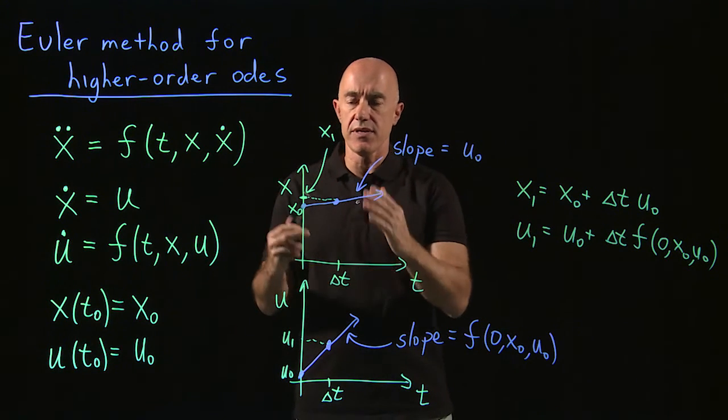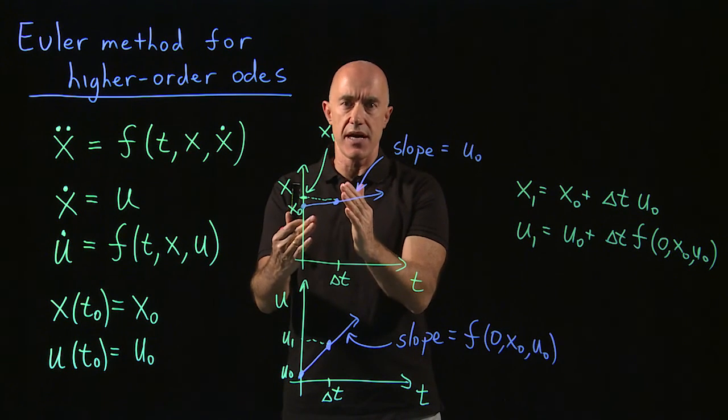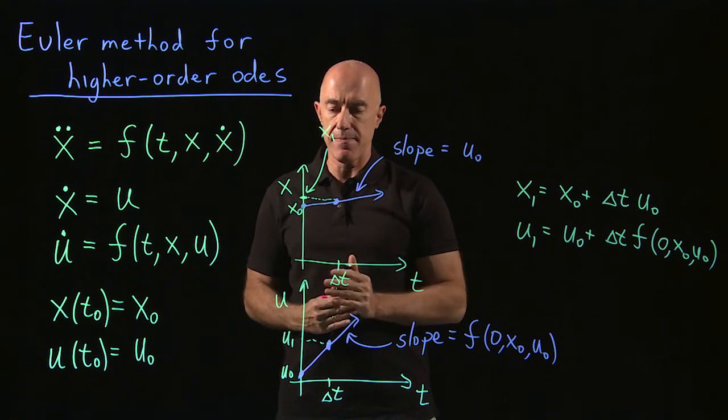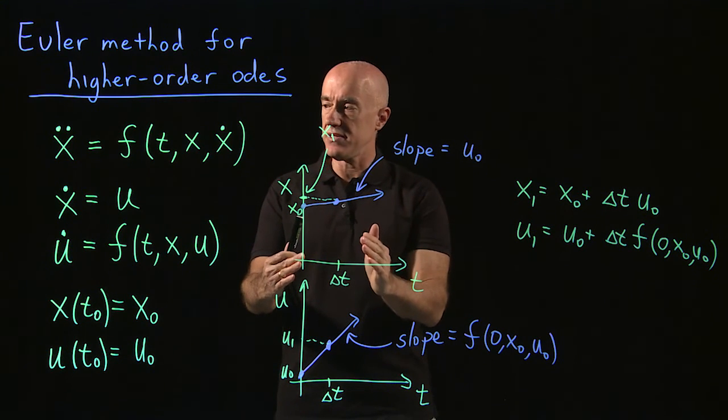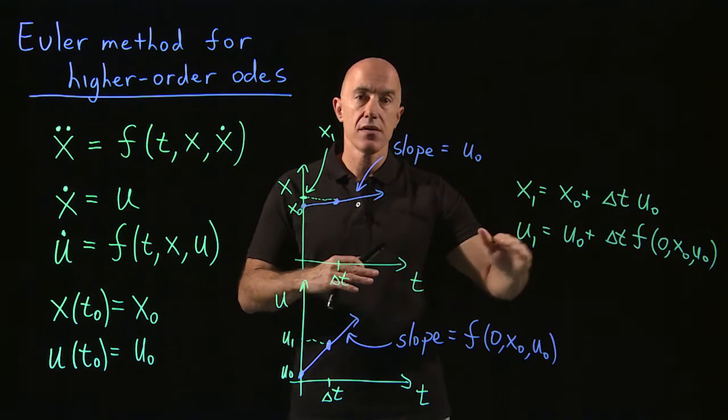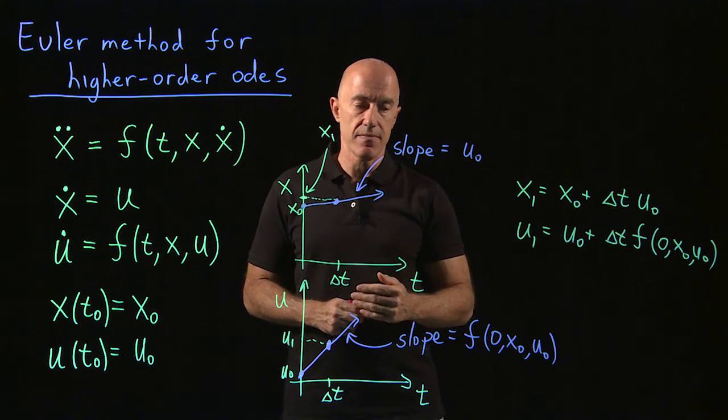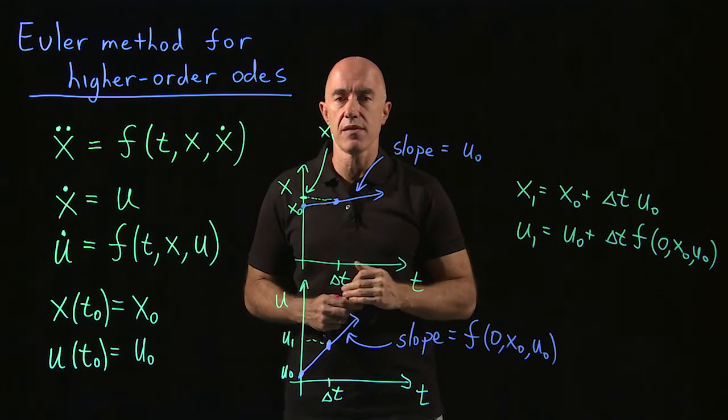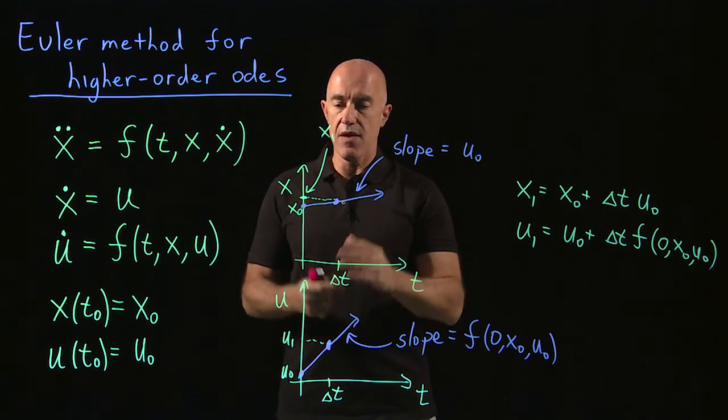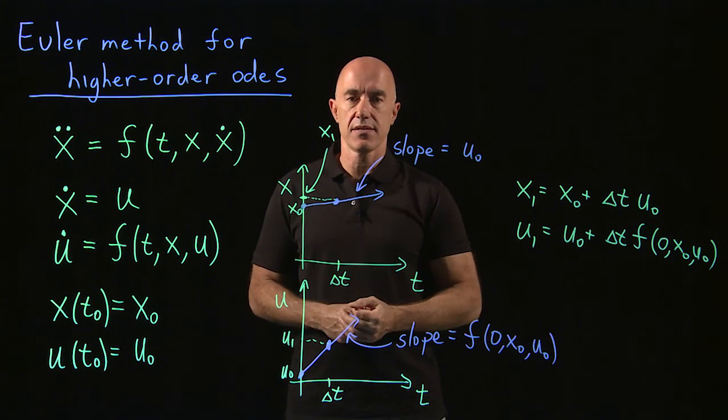The trick here is that the Euler step has to be done on both equations at the same step. So to go from 0 to delta t, we need to increment both x and u. Then x1 and u1 becomes our new initial conditions, and we repeat the process.